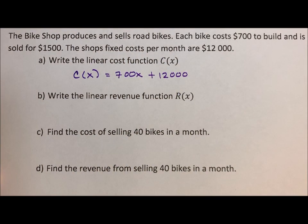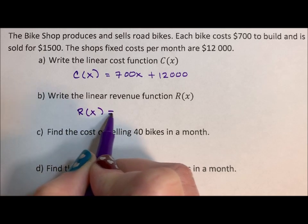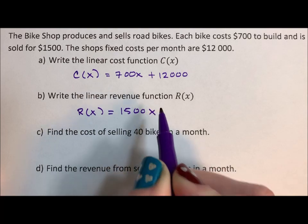Write the linear revenue function. Well, the revenue is how much they make, which is the $1,500 per bike. R(x) = 1500x.